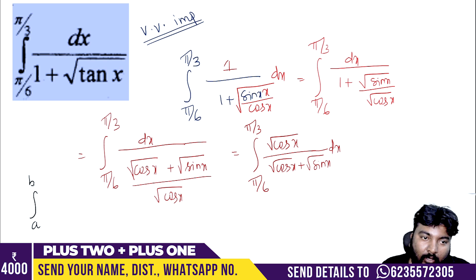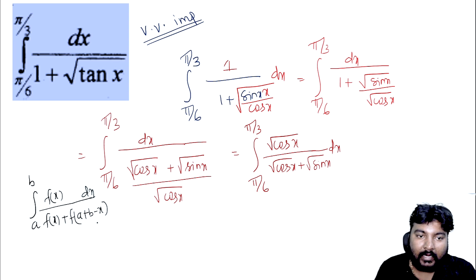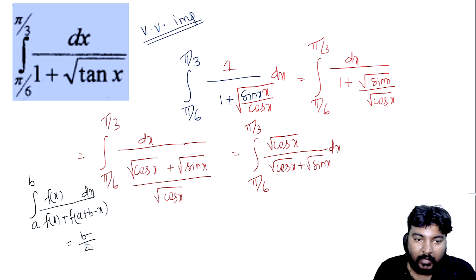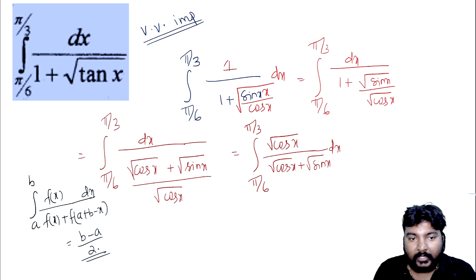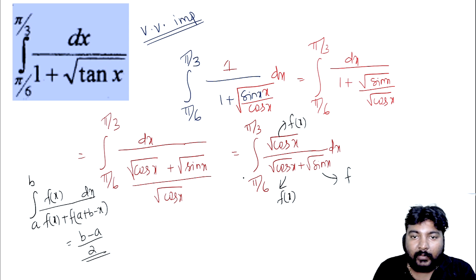Using the property: integral from a to b of f(x) dx equals (b minus a) over 2, when f(x) plus f(a plus b minus x) is constant. Here f(a plus b minus x) corresponds to substituting π/6 plus π/3 minus x, which equals π/2 minus x.